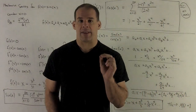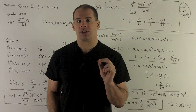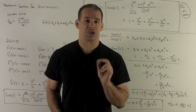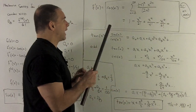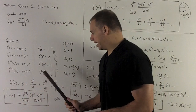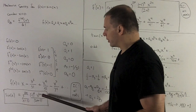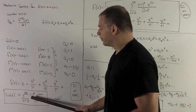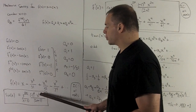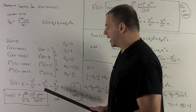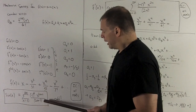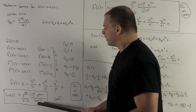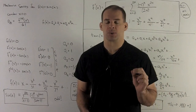Now that we have that, we can get the Maclaurin series for cosine of x just by taking the derivative of the series for sine of x. For the general term, I take the 2n+1 on the x, bring that down, then reduce the power by 1, so the powers of x we'll be looking at are x to the 2n. For the denominator, bringing the 2n+1 down from (2n+1) factorial cancels that factor.